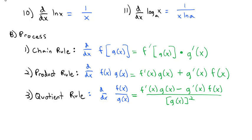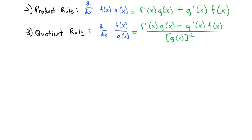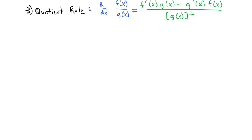What we found we could do is combine the quotient rule, product rule, and chain rule with each of these 11 formulas to find all sorts of different types of derivatives. So let's try a couple examples of finding derivatives.